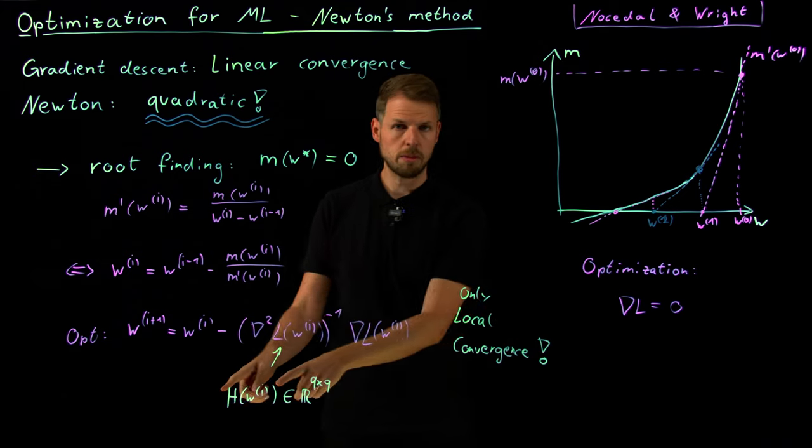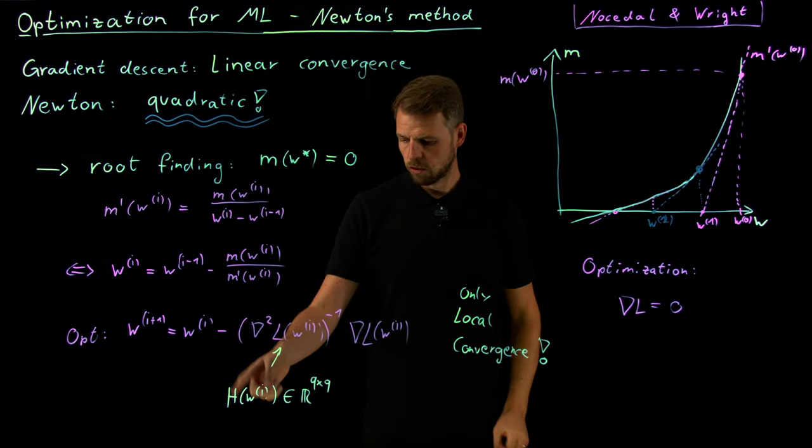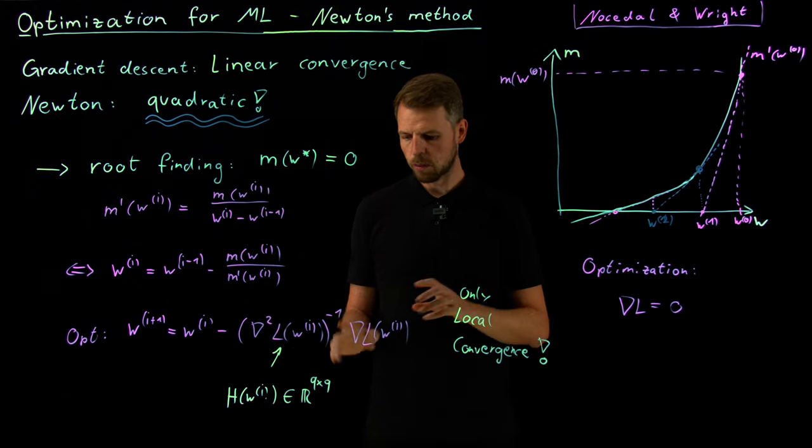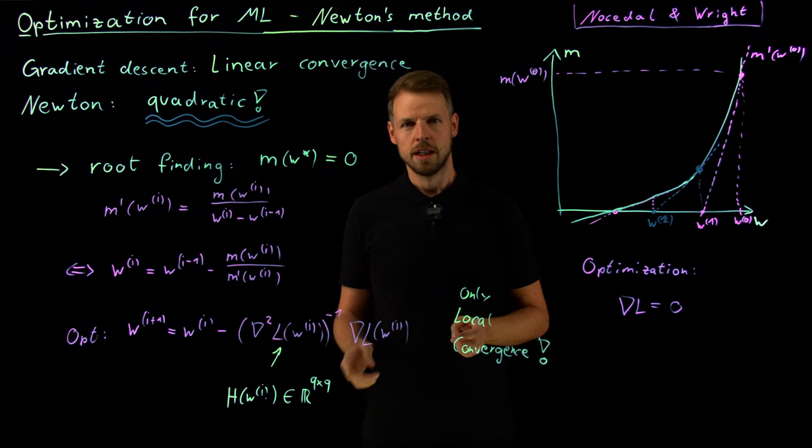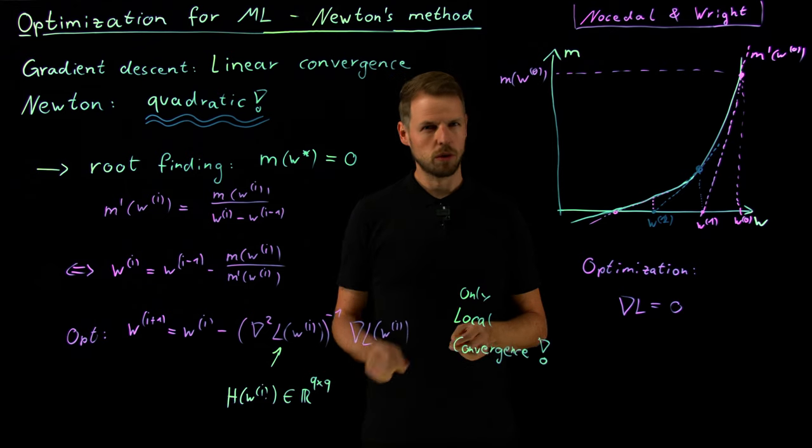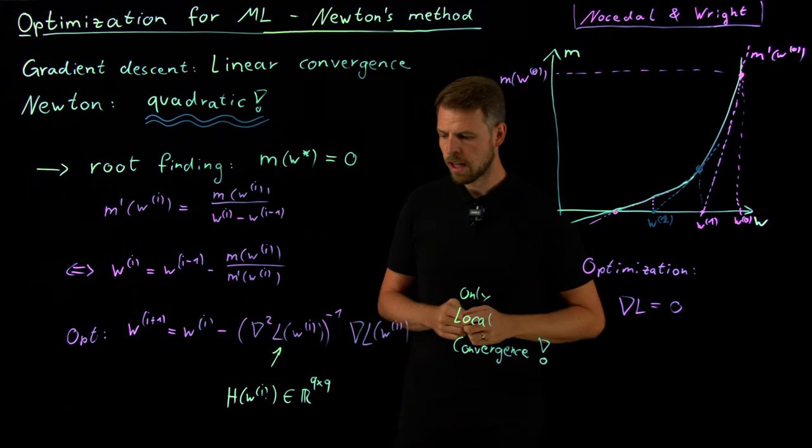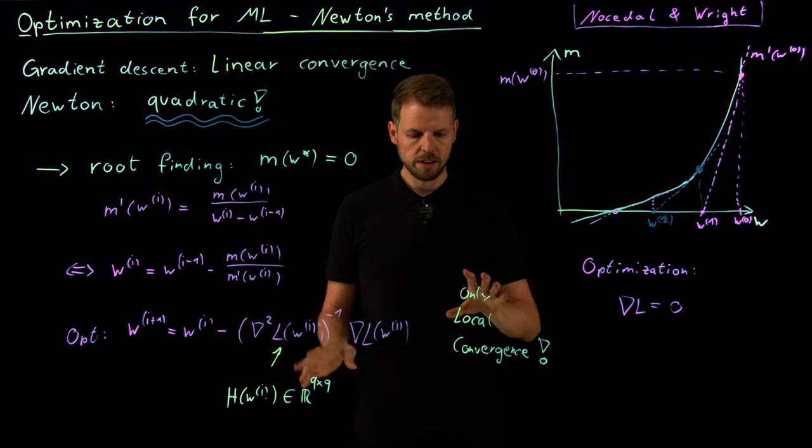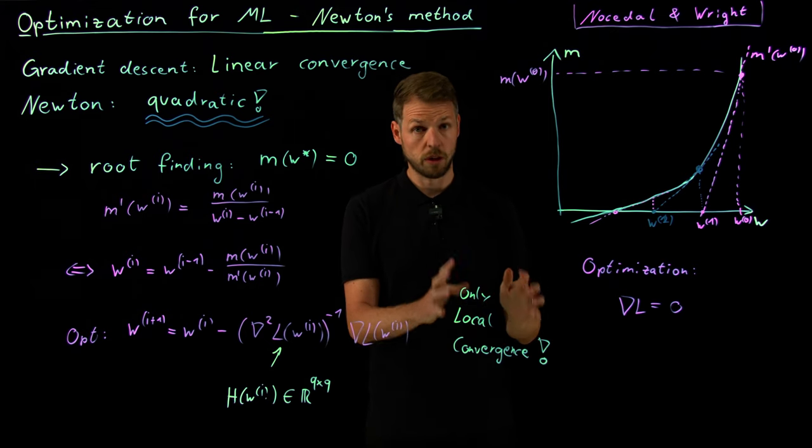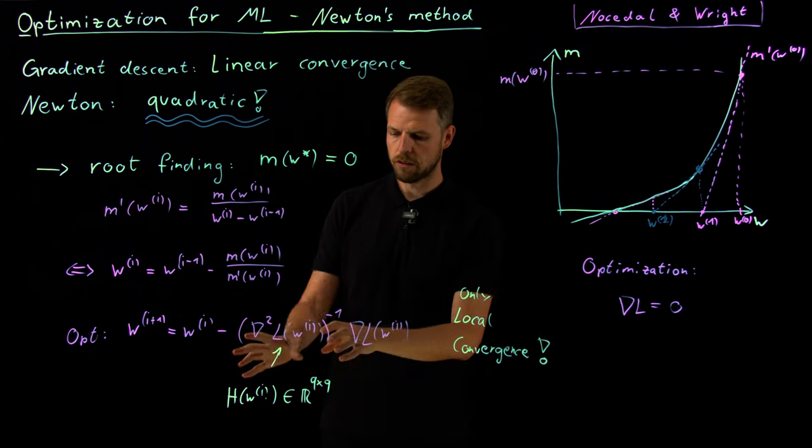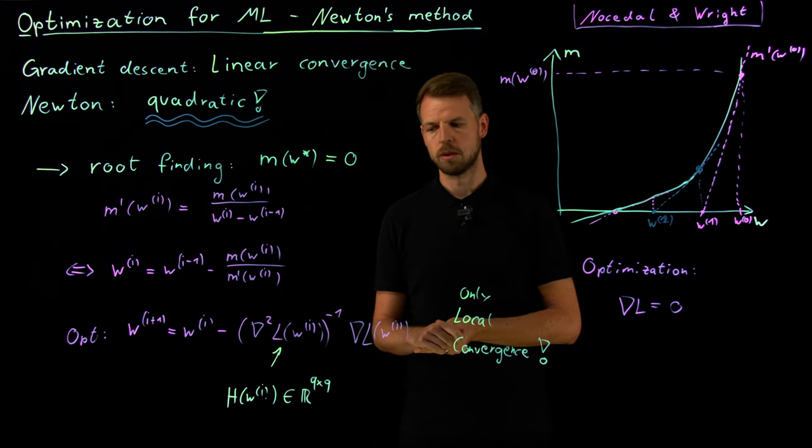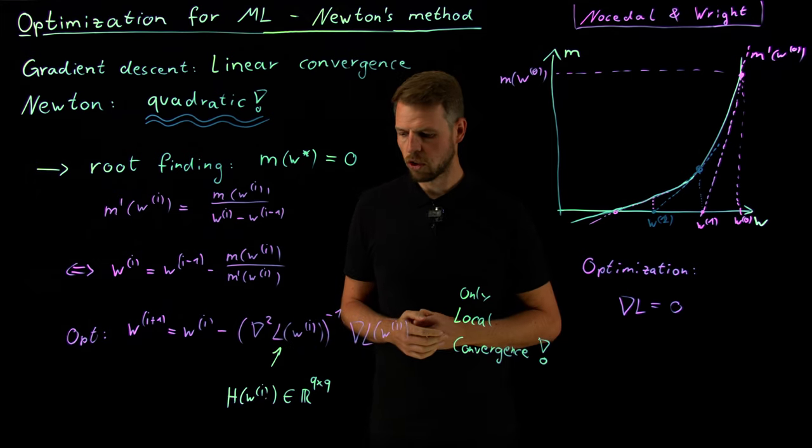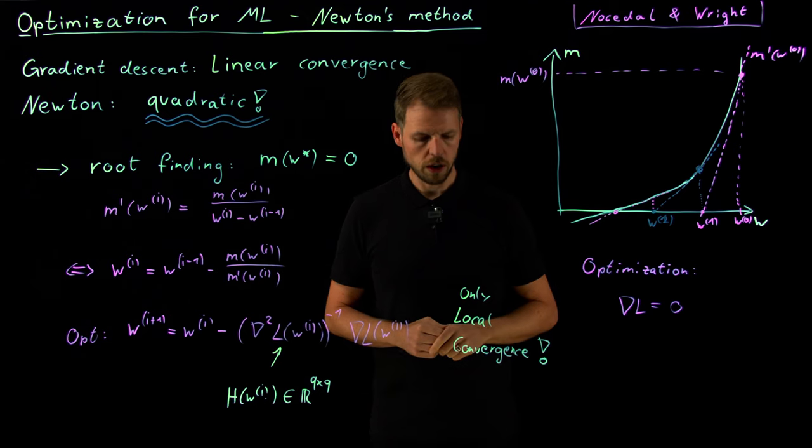Second thing that's really important, we have the Hessian matrix here. Which means we have second order derivatives, and this is a Q by Q matrix. And now think of a neural network where Q is a million, or even higher. And this one is a huge matrix, so you even run into memory issues to even store the thing. And more importantly, computing it is really, really expensive. So there's two disadvantages, you have to be very careful about where to start, and you have to be careful about the price you need to pay.